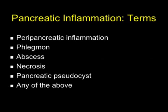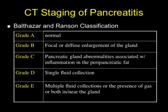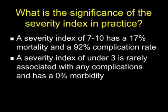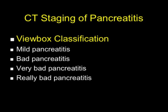Over the years, we've come across many terms for pancreatitis. Phlegmon is one of the classic terms — everyone knows what it means — along with abscess, pseudocyst, and necrosis. There's been a lot of change in terminology; the word phlegmon no longer officially exists, though everyone knows what it means. We went through the Baltazar and Ransom criteria, grade A through E, where they came up with the severity index. Severity of 7 to 10 had a 17% mortality and 92% complication rate; under 3 was rarely associated with complications. We always joke about a viewbox classification — mild pancreatitis, bad, very bad, and really bad — but people are really trying to target standardized terms to compare outcomes between institutions.